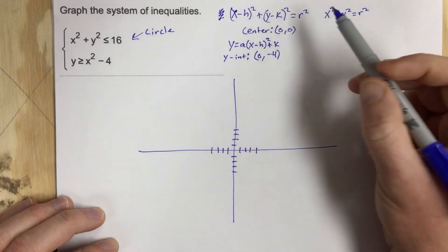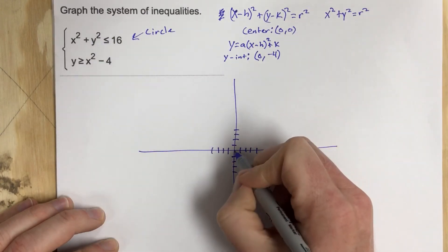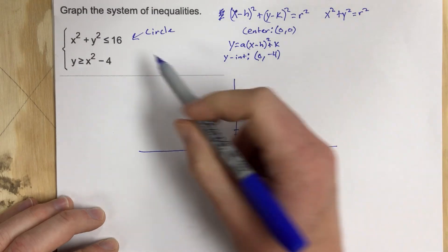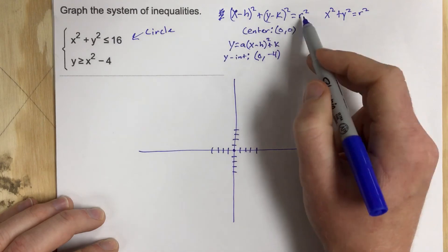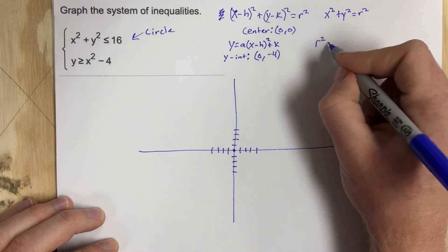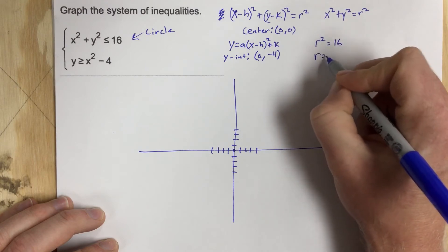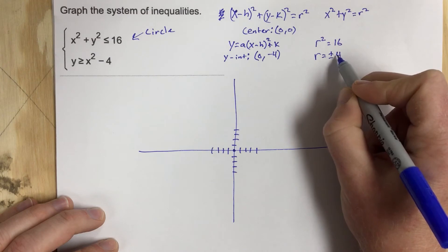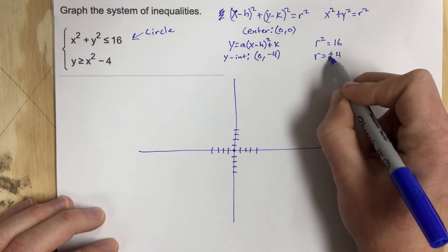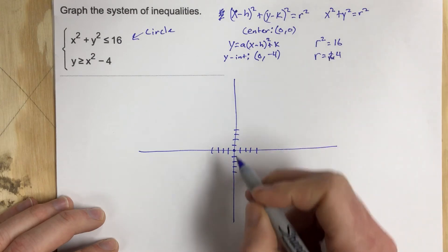And I'm going to graph this circle. To graph the circle, we know the center is at 0. The radius though, this says 16 right here. This is radius squared. So we're going to have to say radius squared equals 16 and square root each side. So we get r equals plus and minus 4. But we don't need to worry about a radius of negative 4 because that can't happen. So we're going to cross it out. I can't have a negative radius.